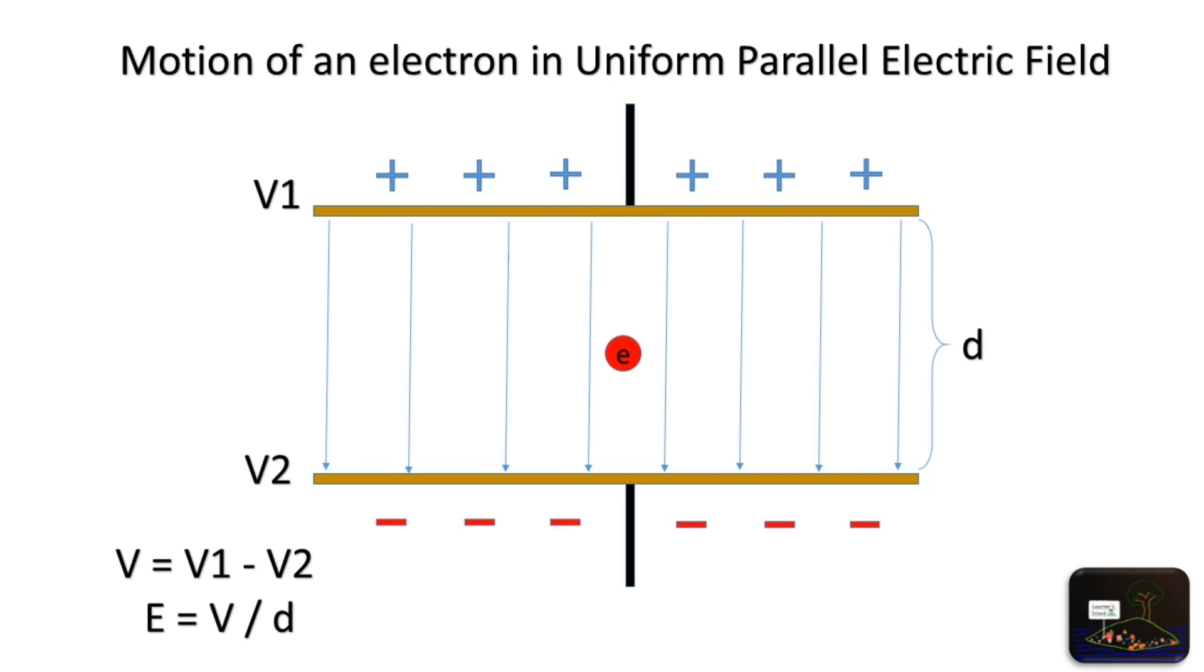Consider the electron is placed between the plates and released. Obviously, the electron will be attracted towards the positive plate by following a straight line path as seen here. Any charged particle placed like this will move towards the oppositely charged plate in a straight line path.